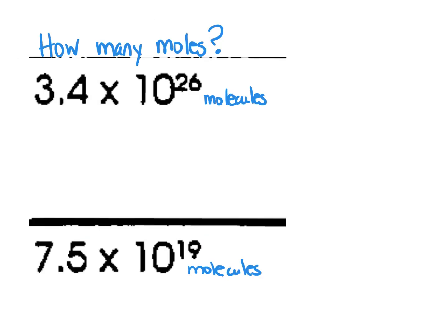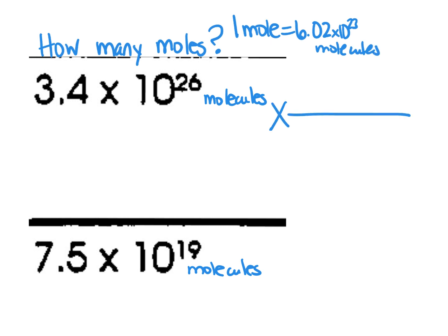Here on these next two problems, we're given molecules and we need to figure out our number of moles. We still use the relationship that one mole is equal to 6.02 times 10 to the 23rd molecules. I'm going to set up my conversion factor, but this time since I'm starting with molecules, I want molecules on the bottom so that molecules cancels out, and I'm going to put moles on the top.